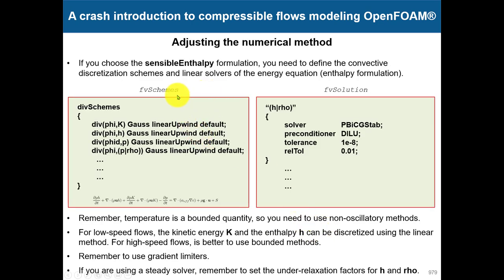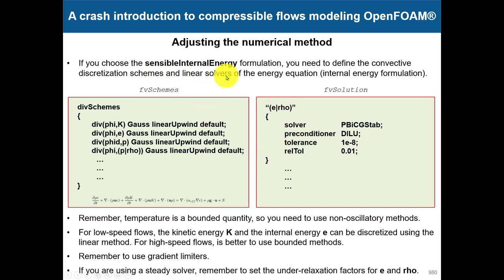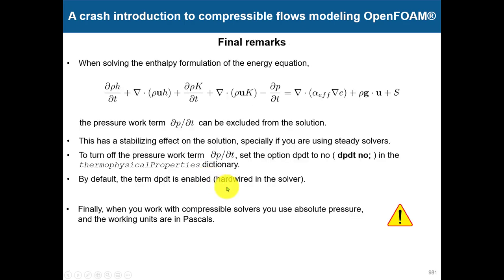Now for the numerics: depending on the type of equation being solved, you have different schemes. For sensible enthalpy, you define divergence schemes for all terms in the equation — remember to aim for second-order accuracy. You also need to solve the new equations for H and rho — rho uses a diagonal method because it is back-substituted. For sensible internal energy, you define the corresponding new variables. When using the enthalpy formulation, there is an extra term: the pressure work. In OpenFOAM you have the option to disable or enable this. By default it is always enabled, but you can disable it — sometimes it can cause convergence problems.